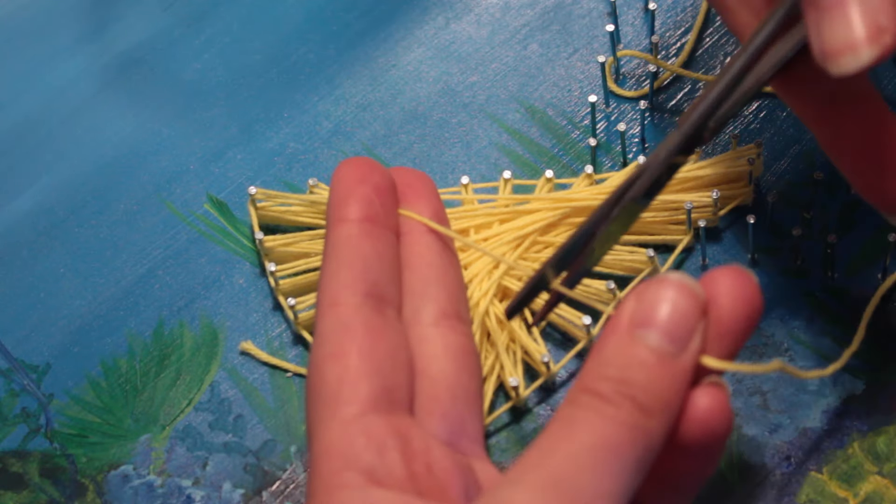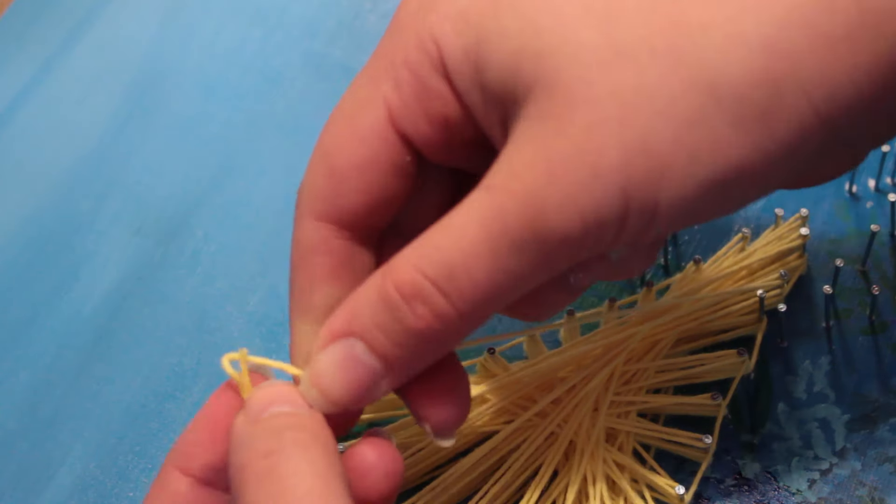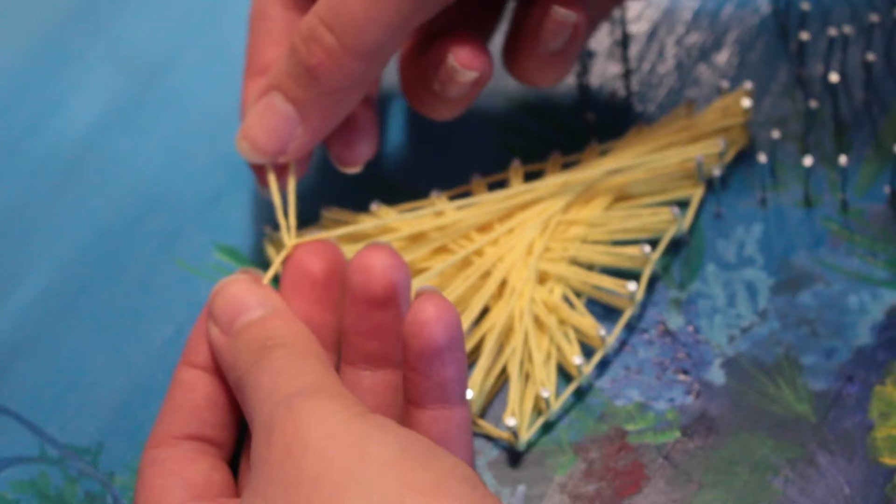When you're done with the section you're working on, cut the yarn while holding it tight, and then make a knot and tie the knot around the last nail you were at.